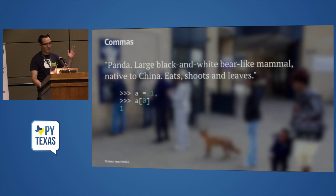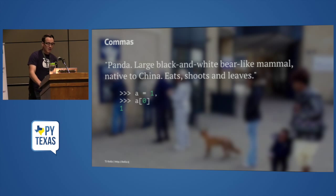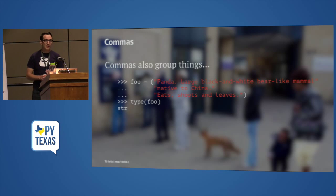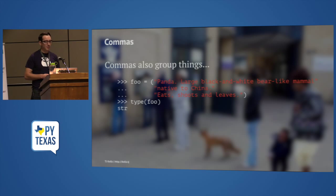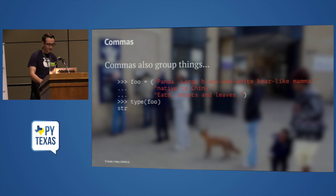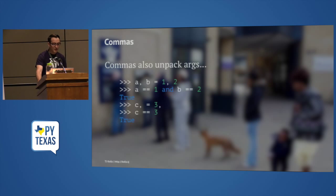The comma does lots of things in Python. It does things like groupings — so if I have a big multiline string separated with backslash escape newlines, I can replace that with a nice list-ish looking thing, but with no commas. When I run type against my foo object, I get a string back. Commas also unpack arguments — this is something a lot of people don't know.